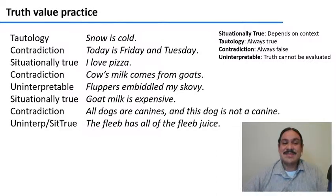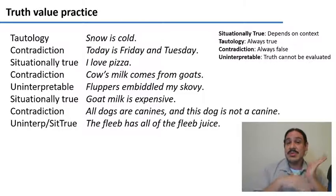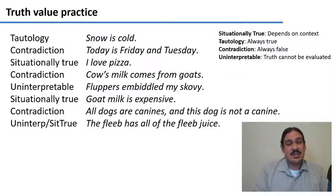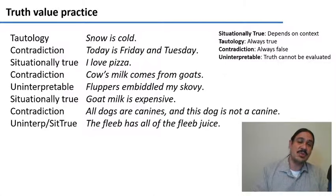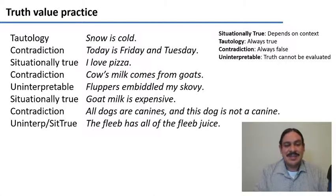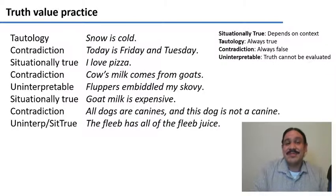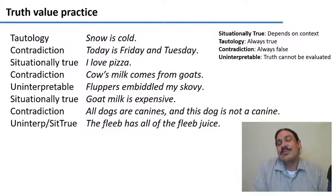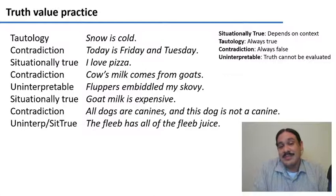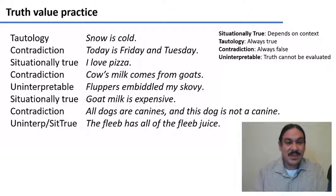'Goat milk is expensive' is a situationally true sentence because it depends on where you are — maybe somewhere it's cheap, maybe somewhere it's expensive. 'All dogs are canines and this dog is not a canine' has to be a contradiction because there's no way for a dog to be a canine and also not. 'The fleave has all of the fleave juice' is mostly uninterpretable unless you know what a fleave is — perhaps from Rick and Morty — but in reality it's uninterpretable.